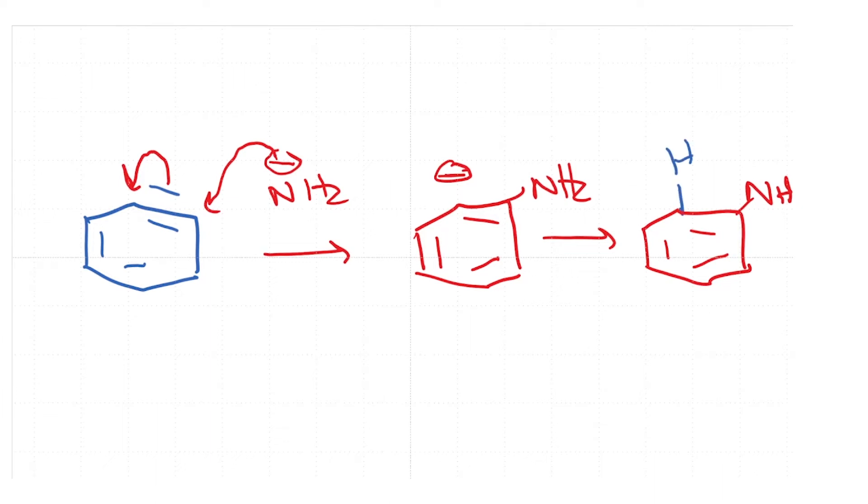So you can convert bromobenzene to aniline using sodium amide and liquid ammonia. Now, if you want to understand the structure of these benzyne compounds, what we need to see first is let us examine the first carbanion that is produced.